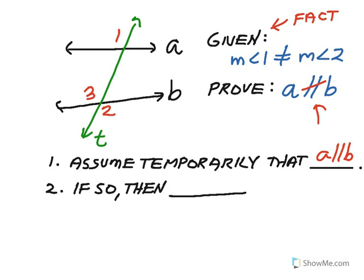Okay. So, step two is where we're going to reason logically until we reach a contradiction of the given. So, I say, okay, well, if A is parallel to B, if so, then angle one would have to be congruent, or the same measure, as angle three. Because, why? Because those are corresponding angles. And those would have to be congruent.